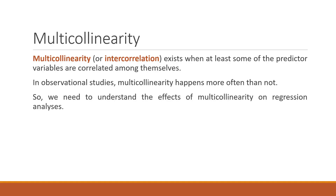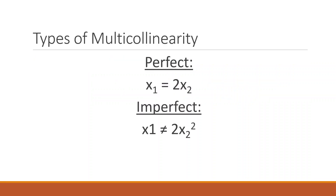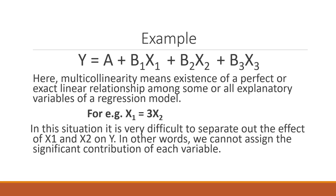Multicollinearity exists when at least some of the predictor variables are correlated among themselves. In observational studies, multicollinearity happens more often than not. If x1 is equal to 2x2, this is perfect multicollinearity; if x1 is approximately equal to 2x2, this is imperfect. In our regression equation y = a + b1x1 + b2x2 + b3x3, multicollinearity means the existence of a perfect or near-linear relationship among some or all explanatory variables.